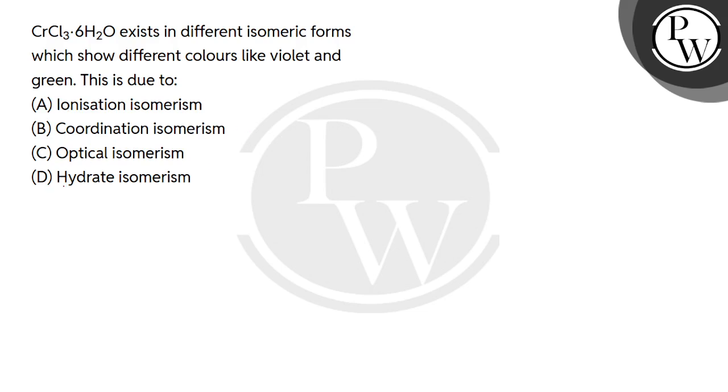First, let's understand isomerism. Isomerism is when the molecular formula is the same but connectivity or configuration is different. Ionization, coordination, and hydrate are structural isomers, meaning connectivity is different. When you have optical isomerism, it is stereoisomerism, meaning connectivity is the same but spatial orientation or arrangement is different.